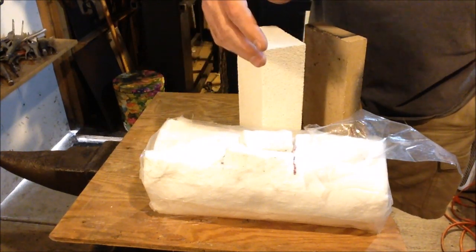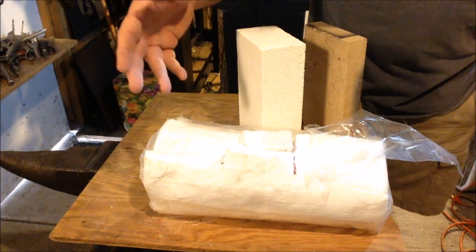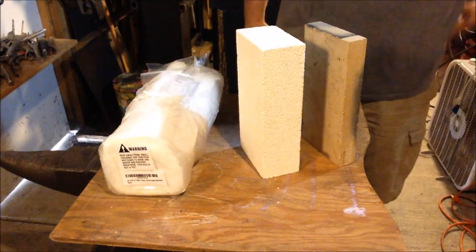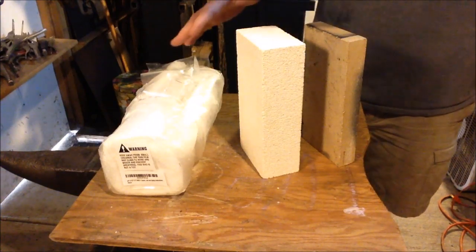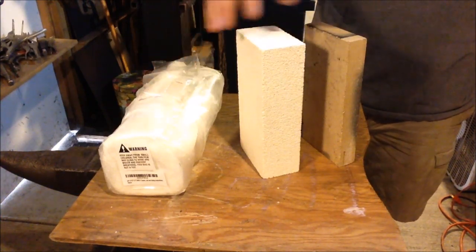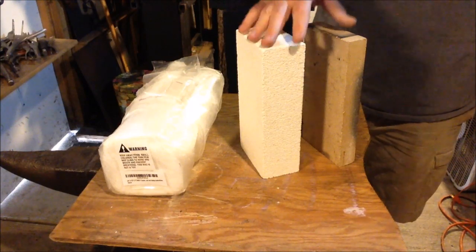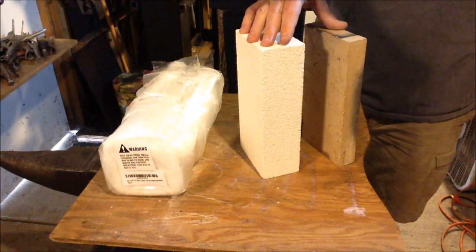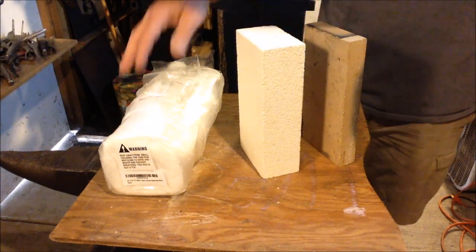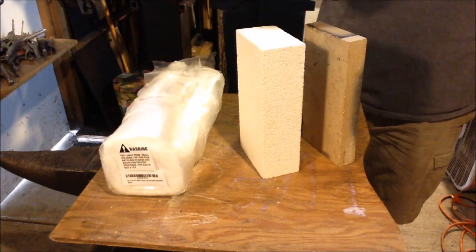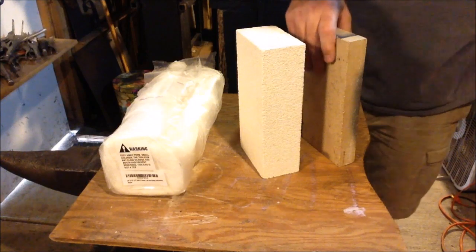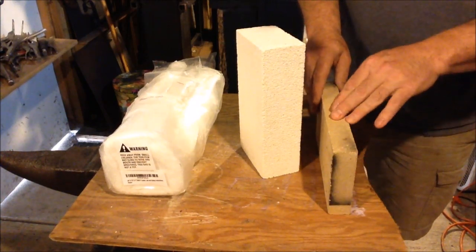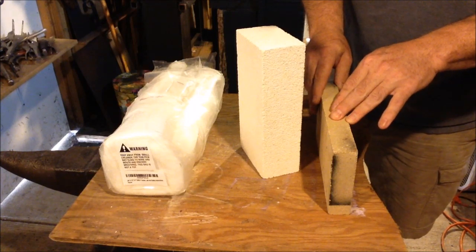The third option that I looked at like I indicated was kaowool. Now this is soft, it's light, it's a ceramic blanket material. You can cut this with a utility knife and it's good up to about 2,600 degrees. The feel of it is much like that fiberglass insulation, that pink fiberglass insulation that you have up in your attics. But it's not fiberglass, it's ceramic, made out of ceramic fibers.